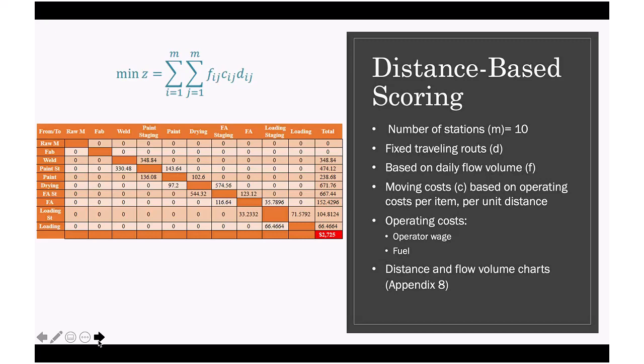To estimate costs for the existing flow, we use the distance-based score method. We used Google Earth to measure the distance between departments' centroids, as you can see in the distance chart in Appendix 8. You'll also notice we have the daily flow volume chart between departments. Based on annual trailer output, the plant will approximately produce 14 trailers per day, and each trailer is one move. Our sponsor also talked about considering one-third value for manufacturing parts, about five extra movements.